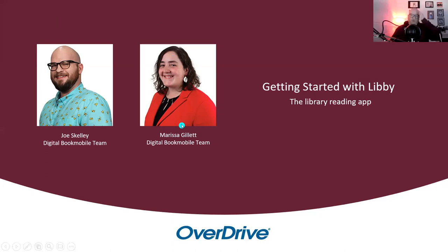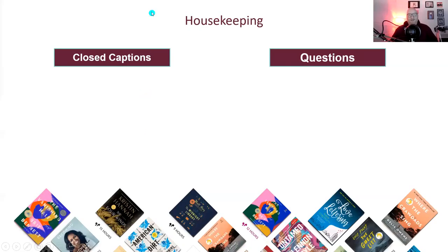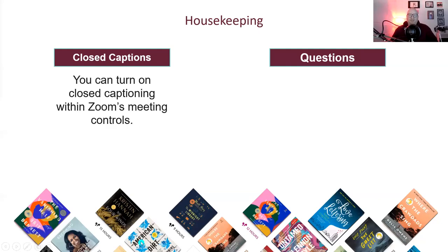Let's dive in — first to the housekeeping. We do have closed captions enabled for this webinar. You can adjust those in your Zoom meeting controls using the box that says CC. By default they should be on your screen, but if you want them off, just tap that box. Or if you'd like them on but need them out of your way, you can drag them to a different part of your screen using your mouse.